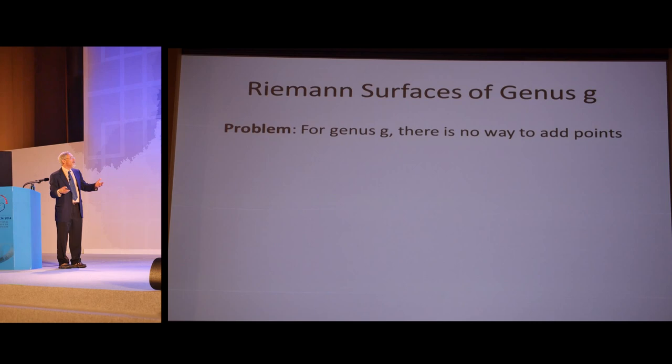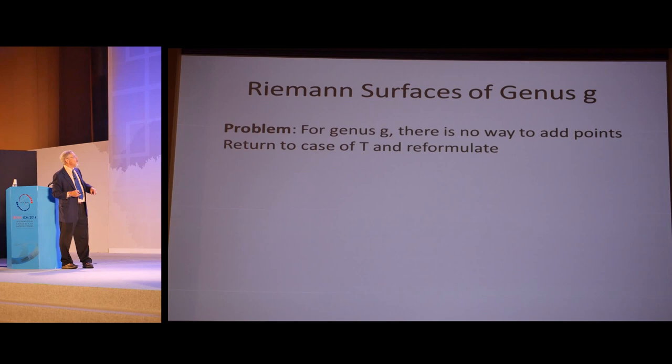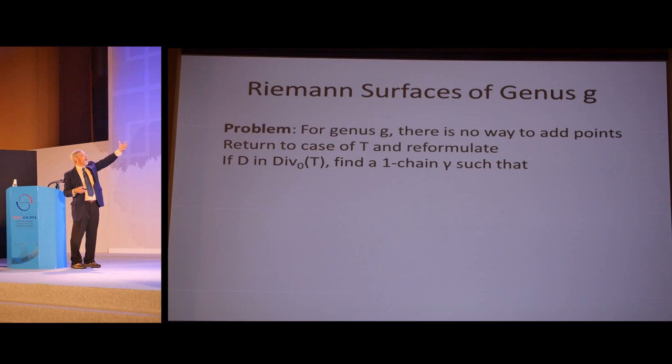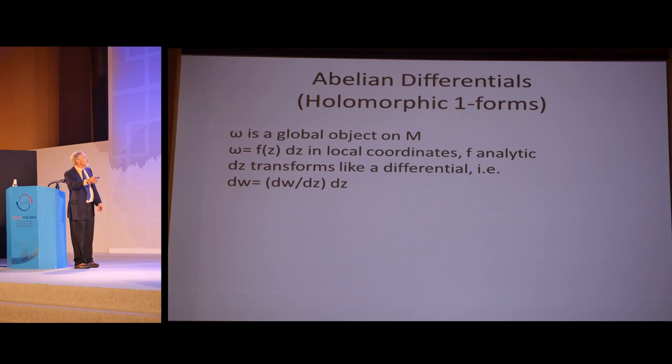If you go to the surface of genus g, there's no way to add points. Something I learned from Philip is that if you have a case you don't understand, you go back to the case you do understand and figure out that you really don't understand that case fully. If you go back to the torus, another way to do things is to take your divisor of degree zero and write it as the boundary of a one chain. Make a series of curves going from the poles to the zeros. Then you can integrate dz along that path. It's easy to see that's this thing we got by adding up the points in the torus modulo lambda, which if you change gamma by a cycle, you'll get elements of lambda here.